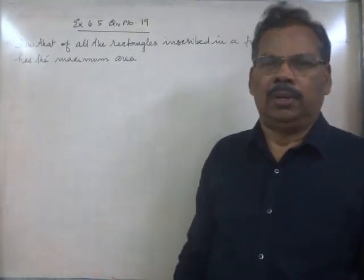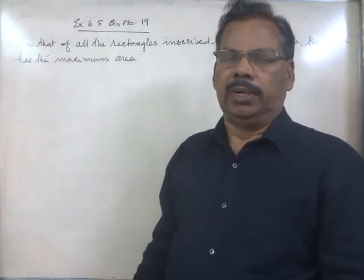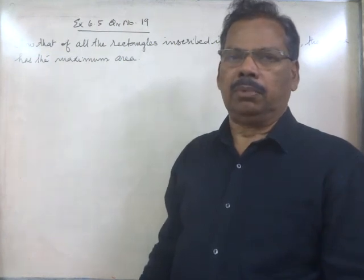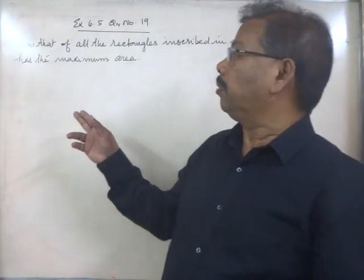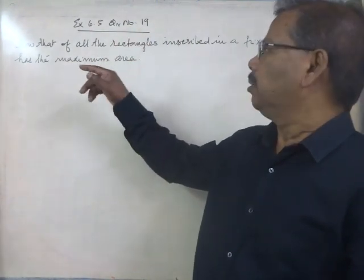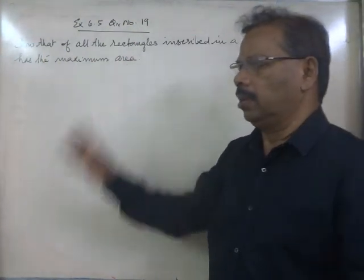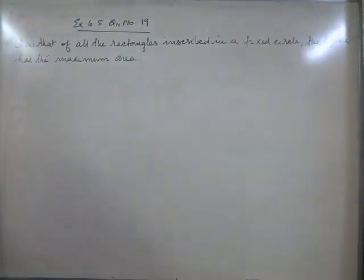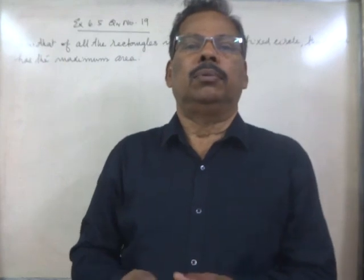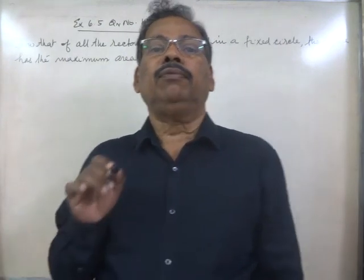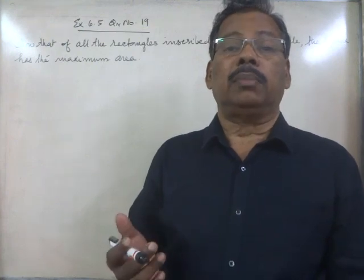Welcome. This online video is for plus two mathematics NCERT syllabus. We discuss application of derivatives — maximum and minimum of functions. Let us discuss a question from your text, Exercise 6.5, Question number 19: of all the rectangles inscribed in a fixed circle, the square has the maximum area. We are given a circle of fixed radius and if rectangles are inscribed in it, we have to show that the square has the maximum area.